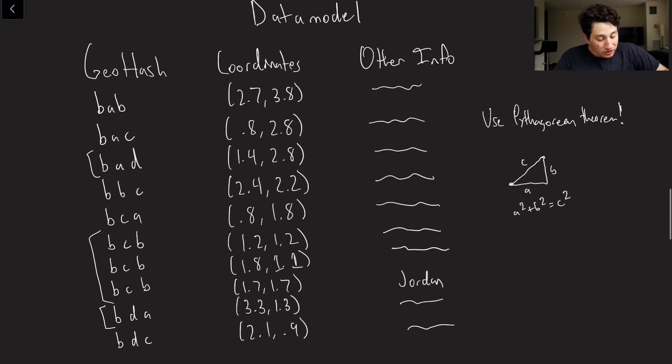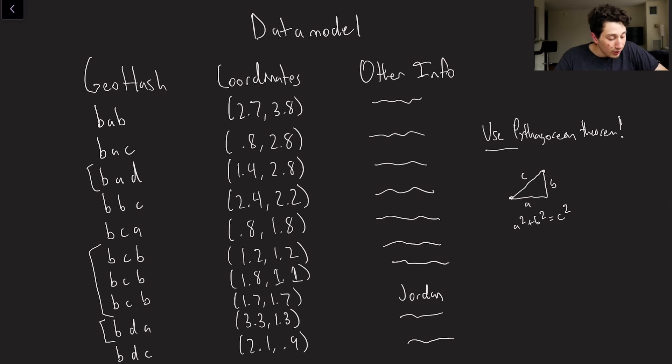So how would we go ahead and calculate whether we're actually within a mile? Well, we could just use our Pythagorean theorem from our geometry class back in eighth grade, which is that when you have a triangle, we know that a squared plus b squared equals c squared. So if we know the distance between the x and the y coordinate, we can quickly find the actual distance between them in terms of a radius. This is a little bit different for latitude and longitude, I believe, but it's kind of the same premise.